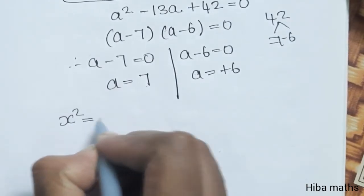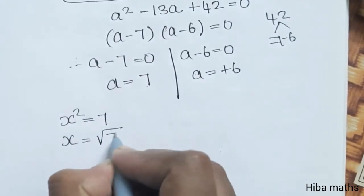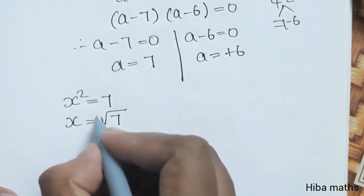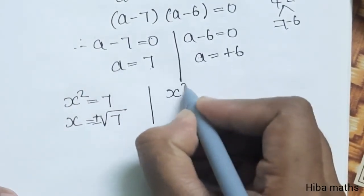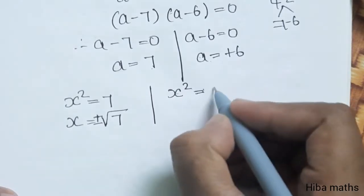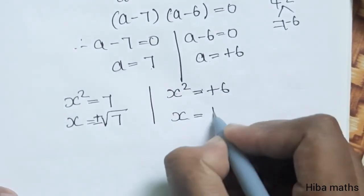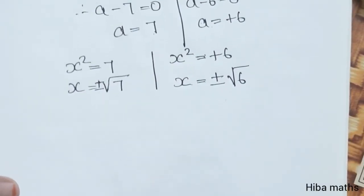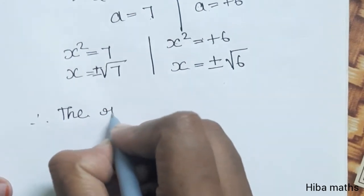So x square is equal to 7 or x square is equal to 6. Therefore x is equal to plus or minus root 7 or x is equal to plus or minus root 6.